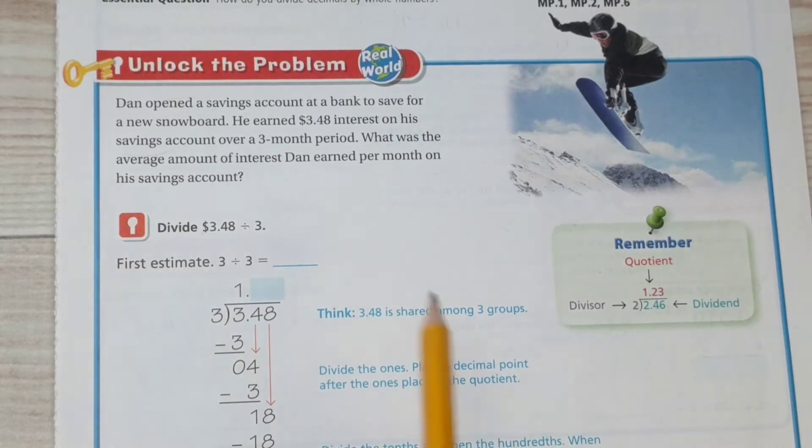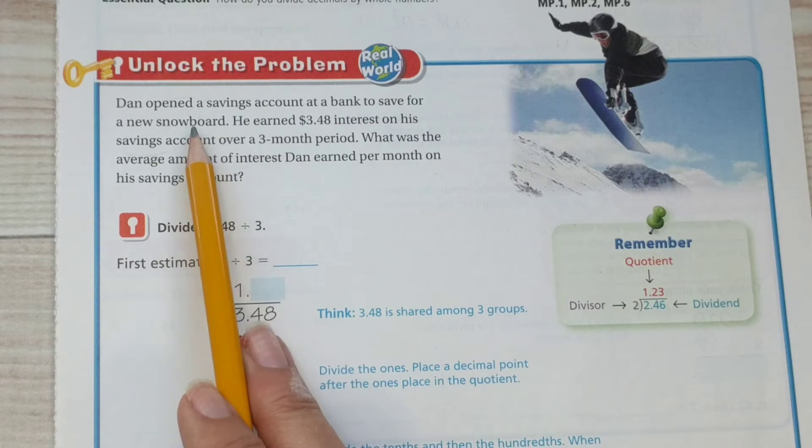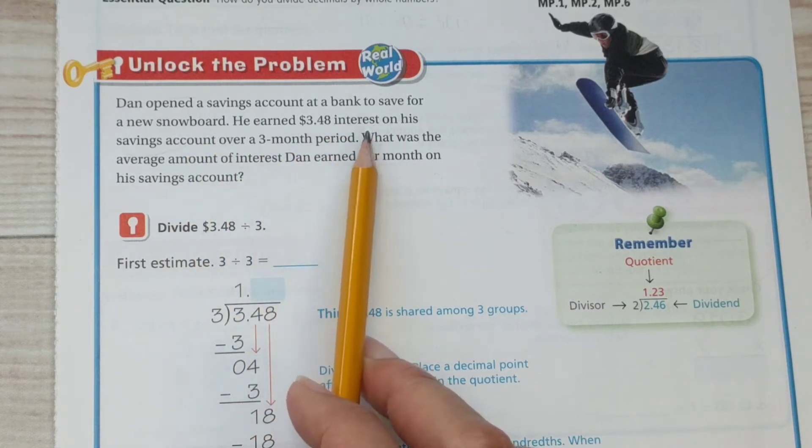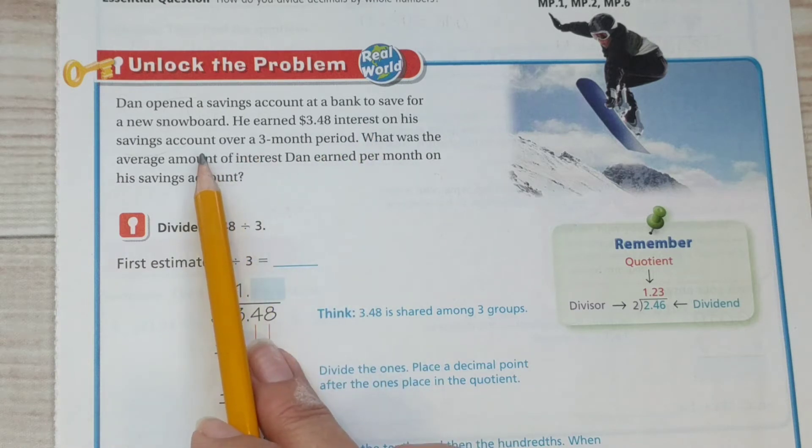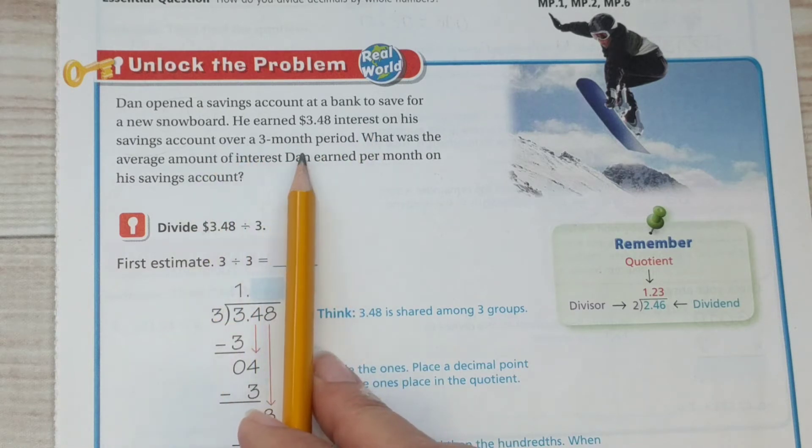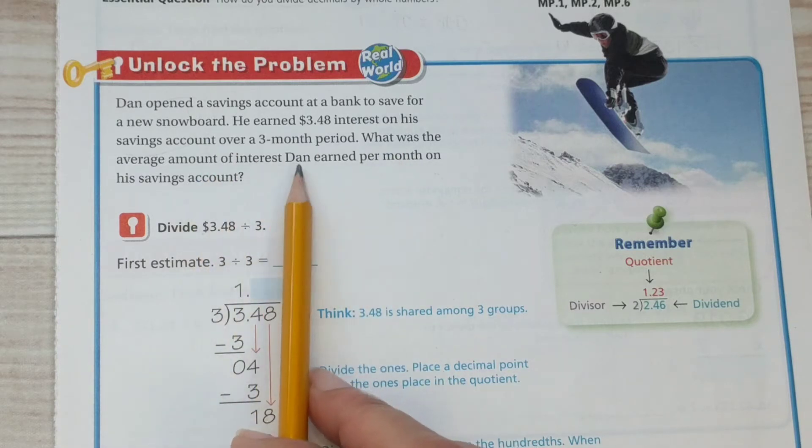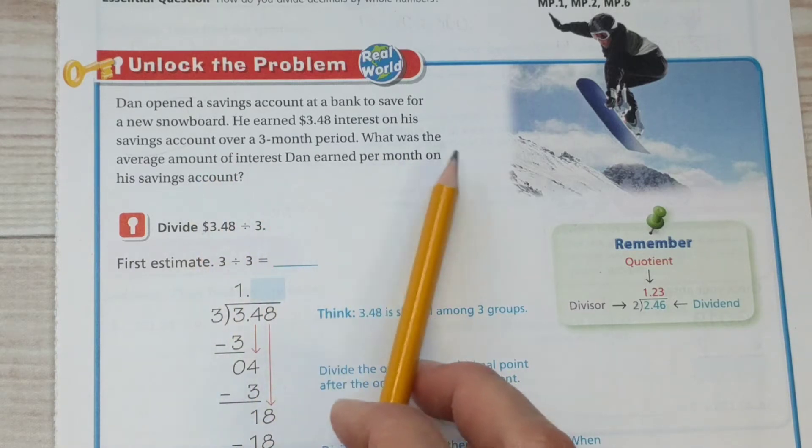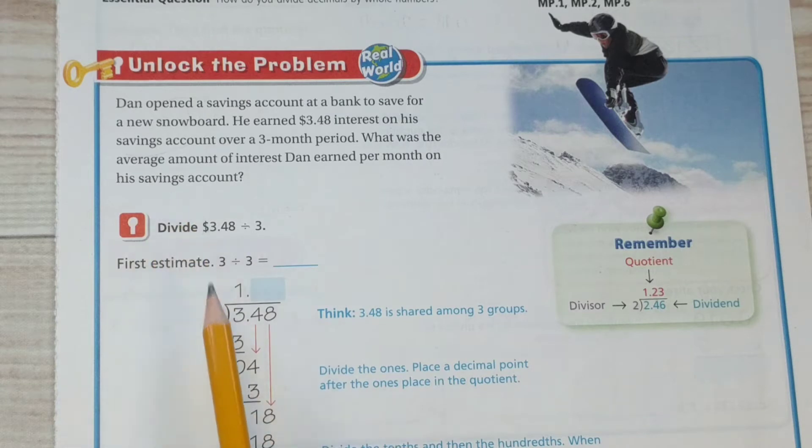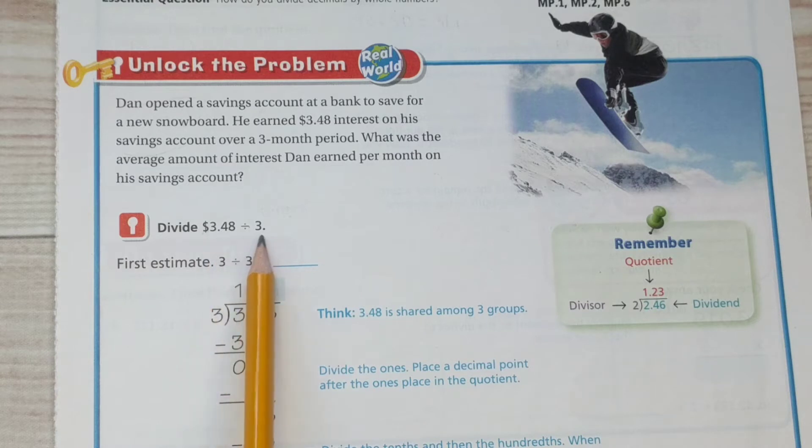Dan opened a savings account at a bank to save for a new snowboard. He earned $3.48 of interest on his savings account over a three-month period. What was the average amount of interest Dan earned per month on his savings account? So we're finding out how much interest he earned each month.